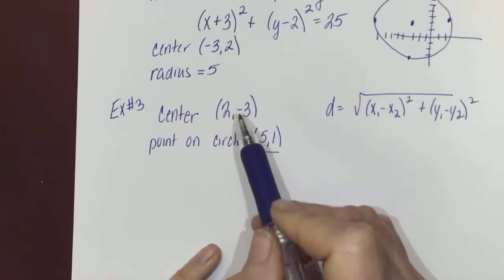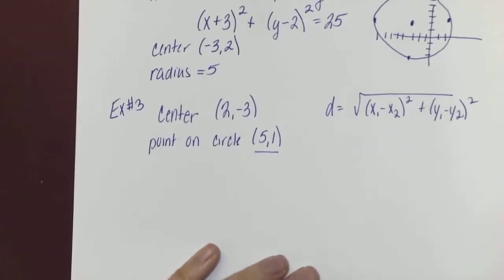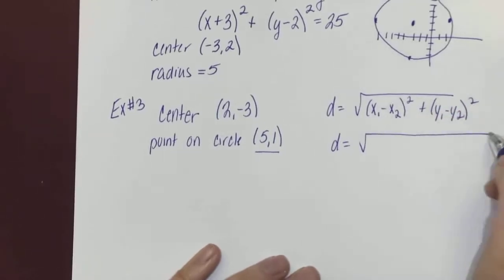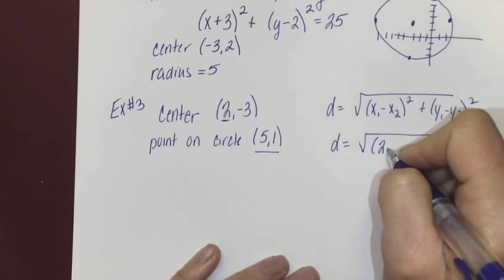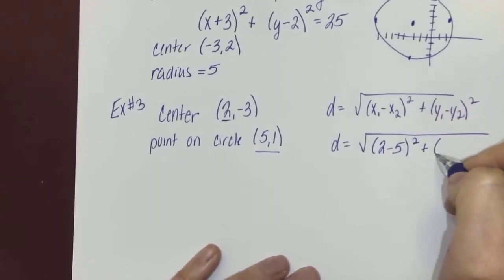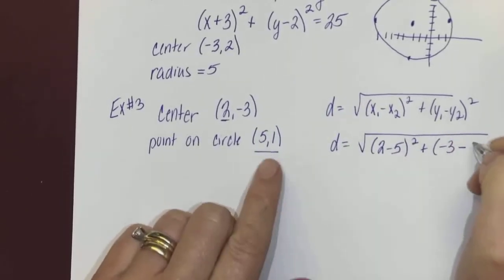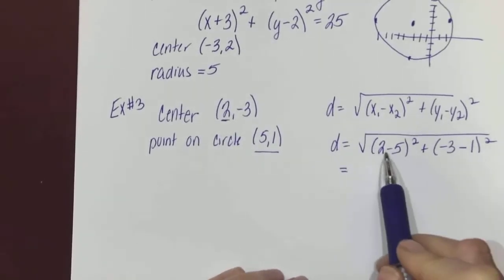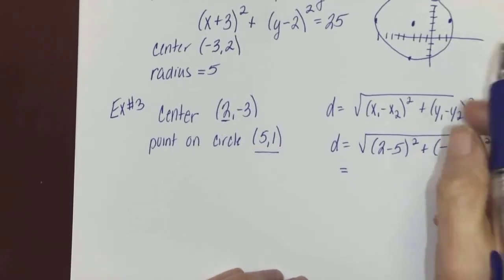Here's my distance formula. I can find the radius. So distance equals square root of... my x values are 2 and 5, so I'll go (2 - 5)² plus my y values are -3 minus the other one, which is 1, squared. 2 minus 5 is -3. -3 squared is 9.